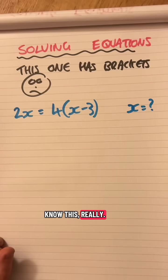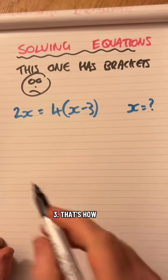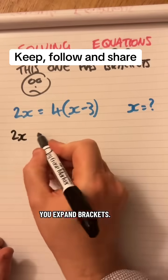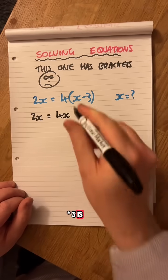I'm going to go 4 times x, 4 times minus 3. That's how you expand brackets. So I'm going to do 4 times x is 4x, 4 times 3 is 12, there's a minus there, gives me that.